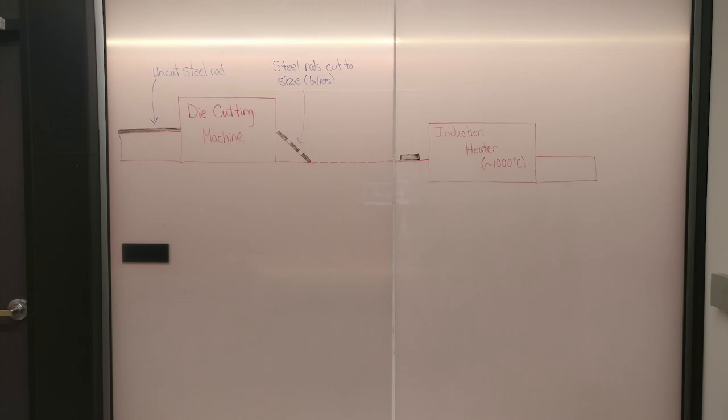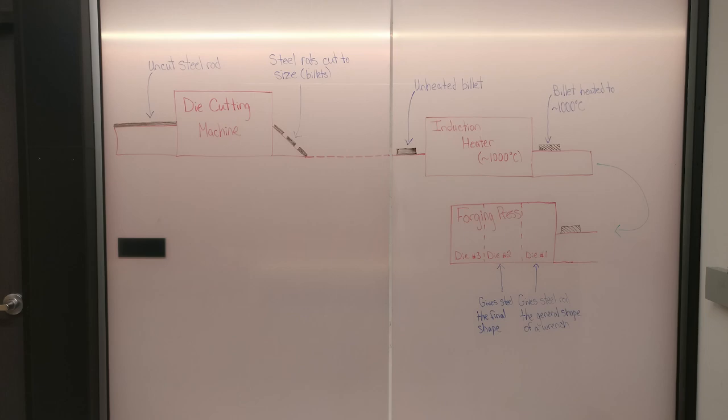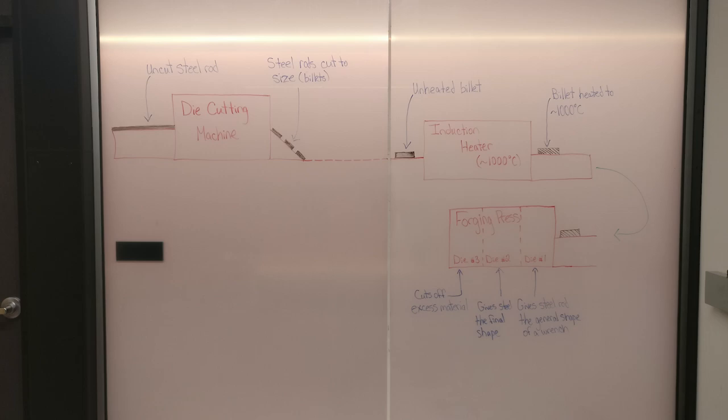They next head to an induction heating machine at 1,000 degrees Celsius. The heated billets are transported to a three-step forging press. First, the billet is given the rough shape of a wrench in the first die. In the second press, a more accurate die forms the final wrench shape. Finally, in the third die, the excess material is cut off.